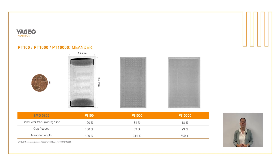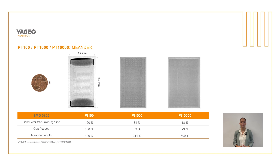From this illustration it becomes clear that with a higher nominal resistance, the width of the conducting path and the width between the conducting paths becomes finer and finer as the meander becomes longer. In the case of the PT10000, the structure of the meander is hardly identifiable even in the highly magnified image. The production of a PT10000 is accordingly complex due to the more intricate meander, and therefore it is not a standard product.